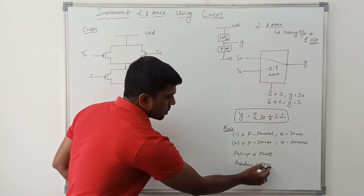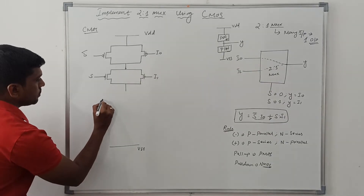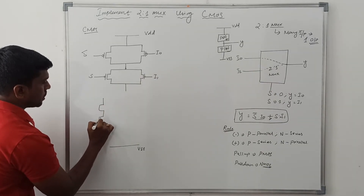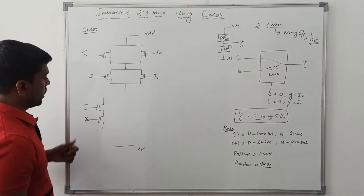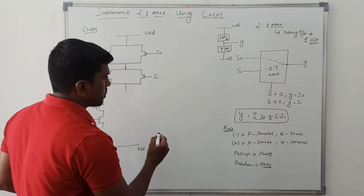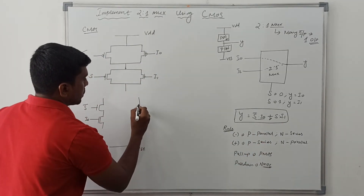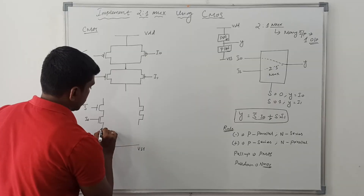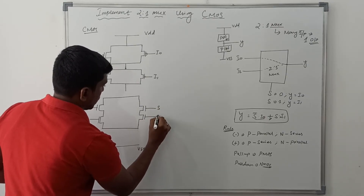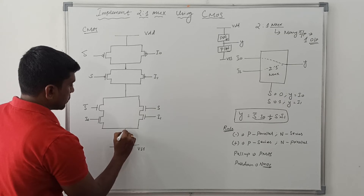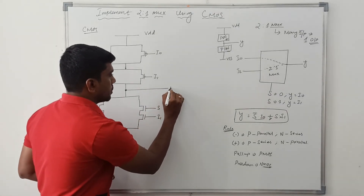Now come to the pull-down network consisting of NMOS. A dot operator is present in the Boolean expression, so NMOS transistors connect in series. Inputs are S-bar and I0. Then a plus operator is present, so they connect in parallel. Then S dot I1 — these two transistors are connected in series. Inputs are S and I1. Output is taken from between the pull-up and pull-down network.